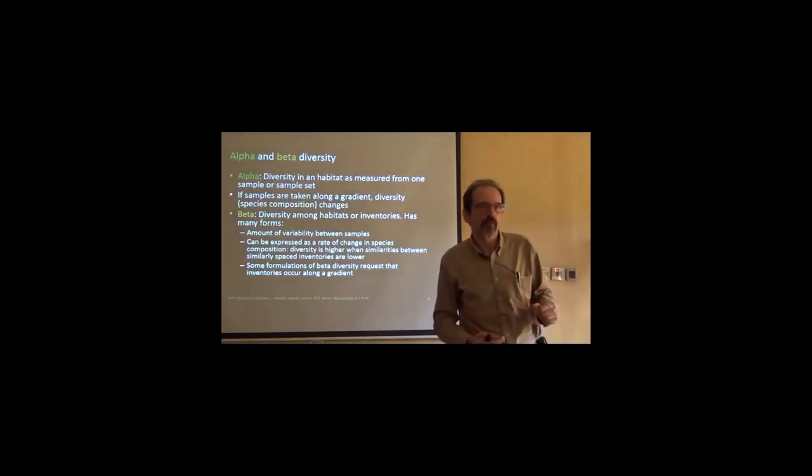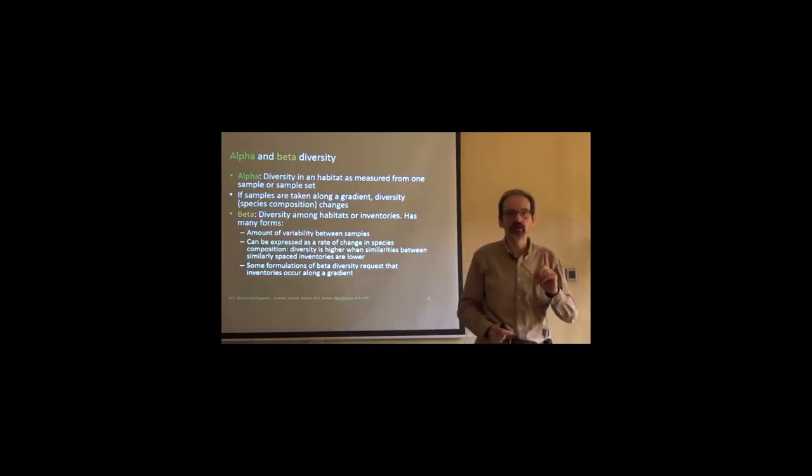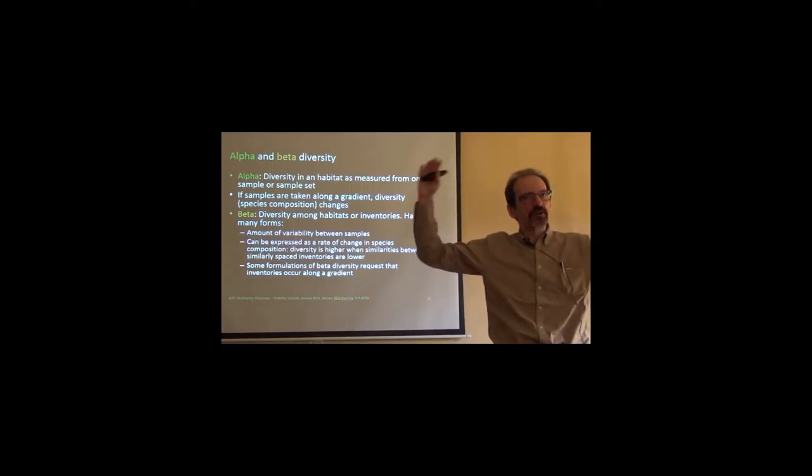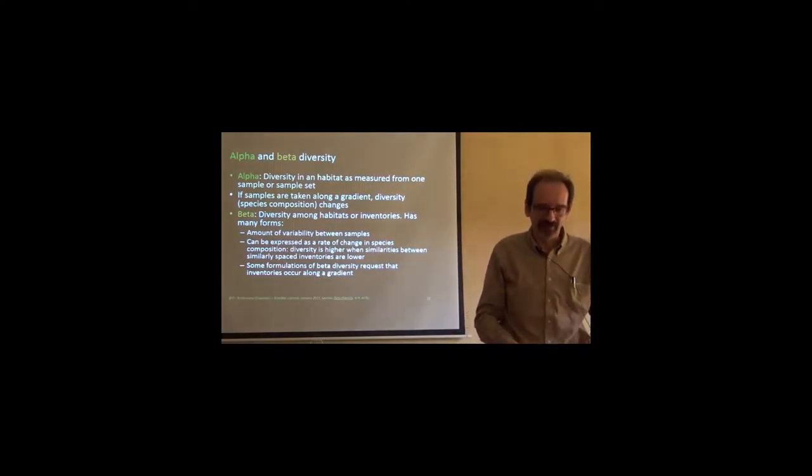Well, alpha is diversity in a habitat, as measured from one sample or one sample set, right? But quite often, when we take a number of samples along a gradient, and this is one of the many interpretations of beta. Beta has a lot of interpretations, and at least 10 or 12 different ways to look at it, and some of them have almost nothing in common.